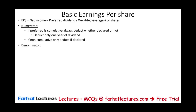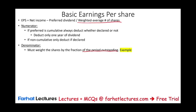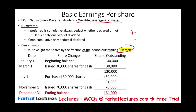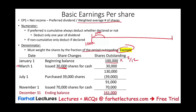Now let's talk about the denominator, which is the weighted average number of shares. You must weigh the number of shares by the fraction of the period outstanding. Why? Because during the year the company might issue new shares or might buy back shares. The best way is to look at an example. Let's assume this company started the year with 100,000 shares — this is the beginning of the year — and they had 100,000 shares until March 1st. On March 1st, they issued 30,000 shares.